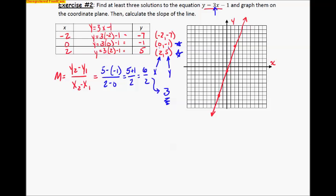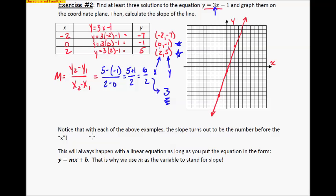Right underneath that in your packet, you have these words here. It says, notice that with each of the above examples, the slope turns out to be the number before the x. Which it did right here. We've got a little arrow there. This will always happen with a linear equation as long as you put the equation in the form y equals mx plus b. Now this guy is going to be really important to us in the future. So keep this guy in mind. And notice we use an m for the slope. And notice we have an m right in front of that letter x. And again, we're going to use that much more in the future.